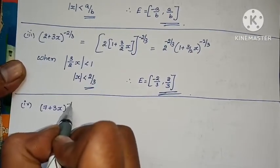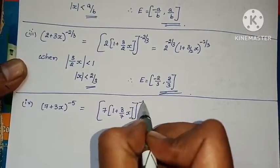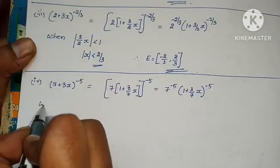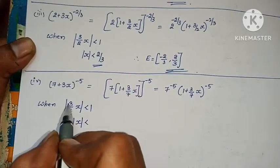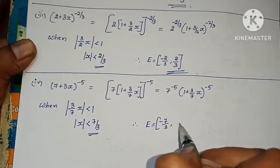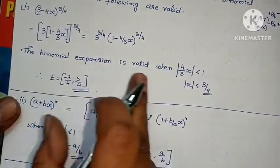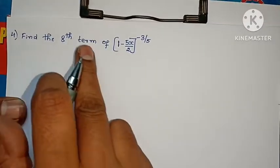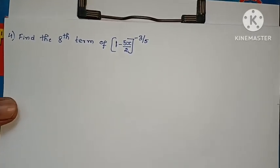Next problem: Find the eighth term of (1 − 5x/2)^(−3/5). Find the 8th term. Use the general term formula — just substitute values into the formula as the solution.